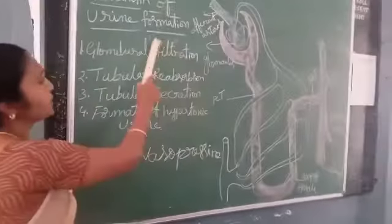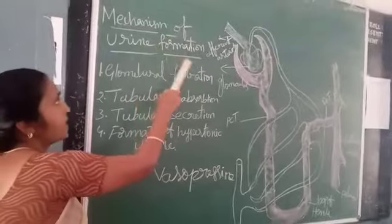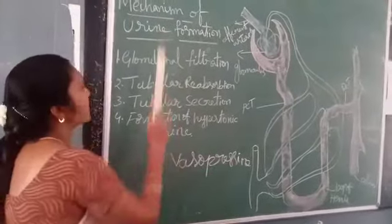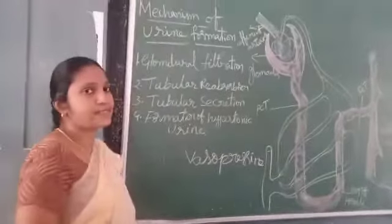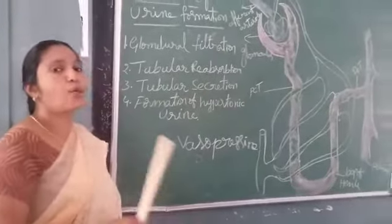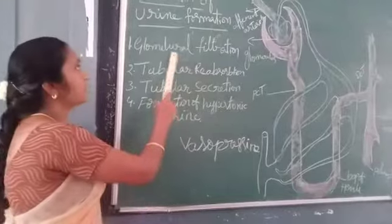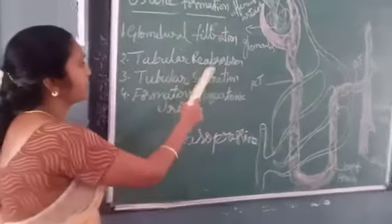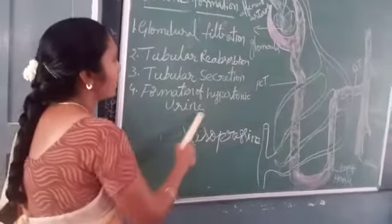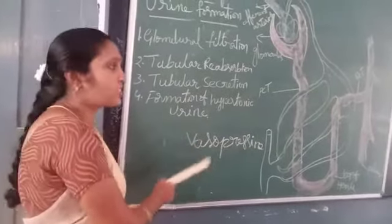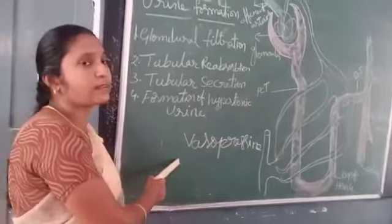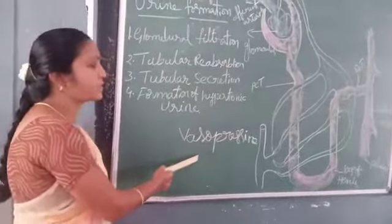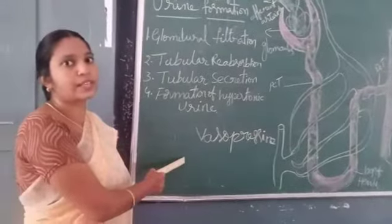What do you learn today? Today we learned about mechanism of urine formation. How many stages are there? There are four stages. They are glomerular filtration, tubular absorption, tubular secretion, formation of hypotonic urine. Which hormone is released when concentrated urine to be passed out? Vasopressin hormone is released. Tomorrow we will discuss about another topic. Thank you.